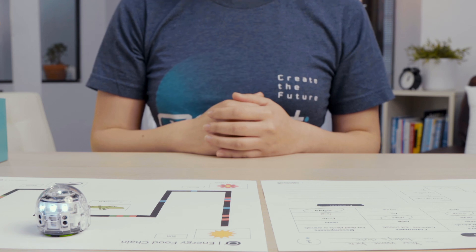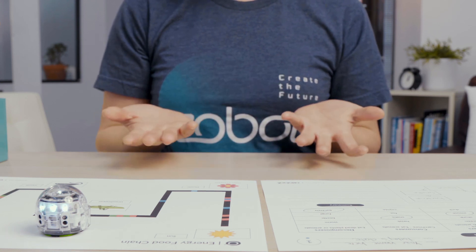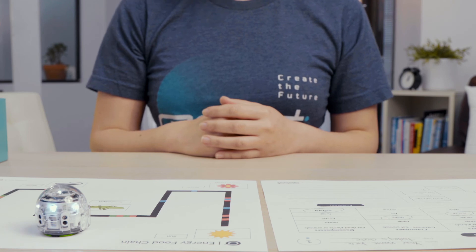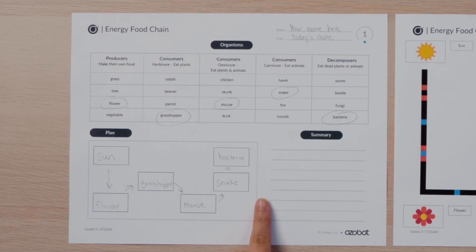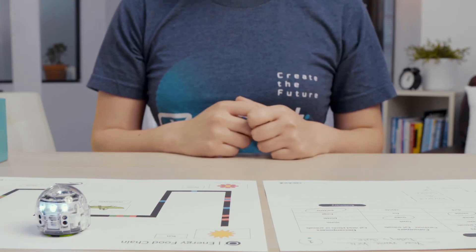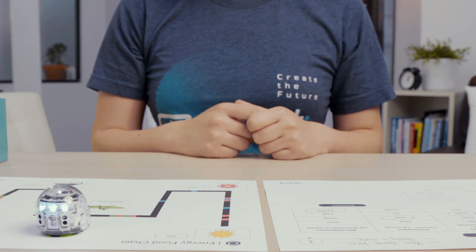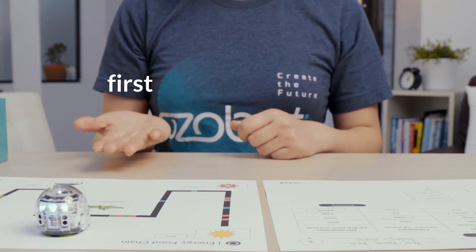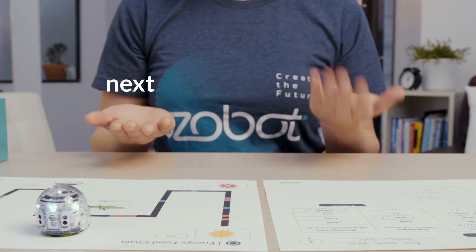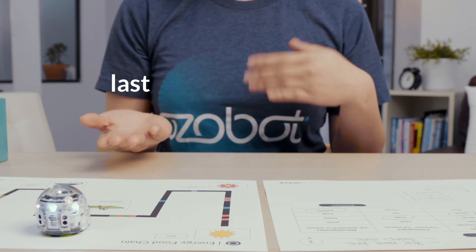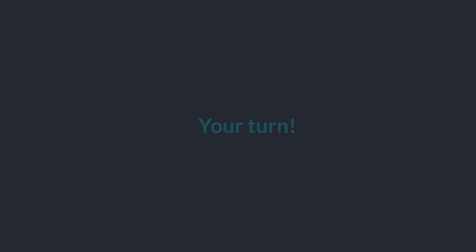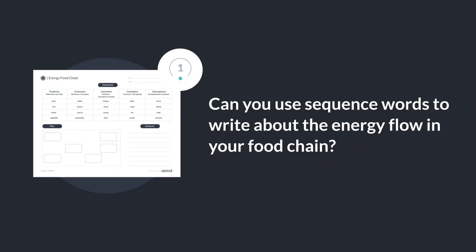Finally, you will write to summarize the energy passed in your food chain. Below your plan on the energy food chain activity sheet, write sentences to sequence the flow of energy shown in your food chain. Remember to use sequence words. You can use sequence words to write about the energy flow in your food chain.